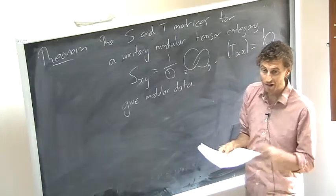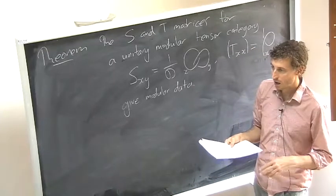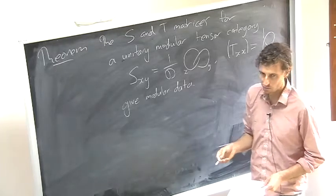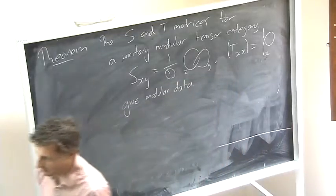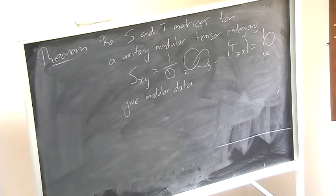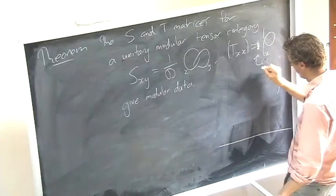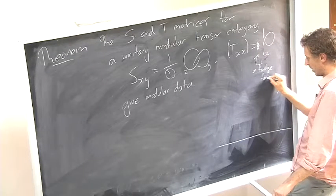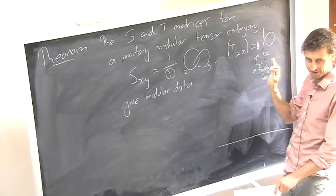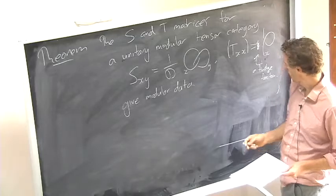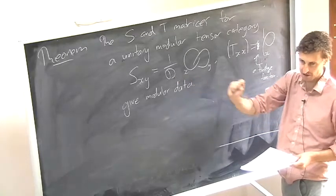There's a question about projective representations versus honest representations. The answer is that once you fix some overall normalization on T, you get an honest representation. The fudge factor is only in T and not in S. This is just: you see some problem in the first equation up to some scalar and you take a cube root of whatever you see going on there.